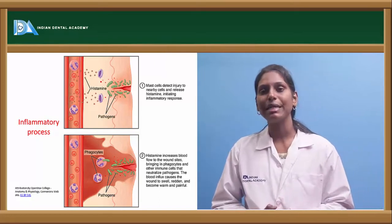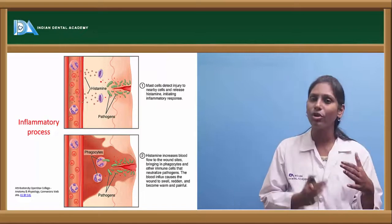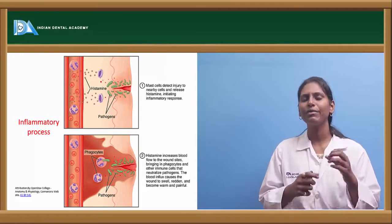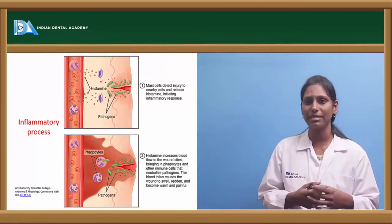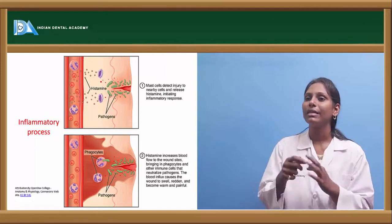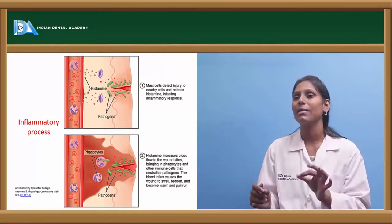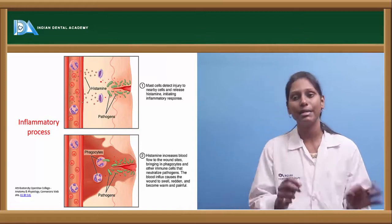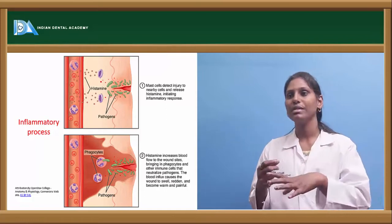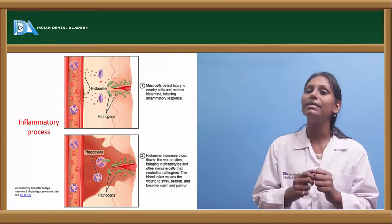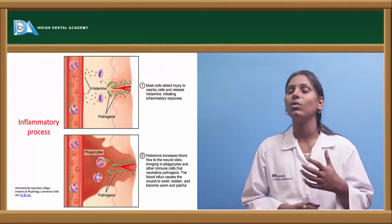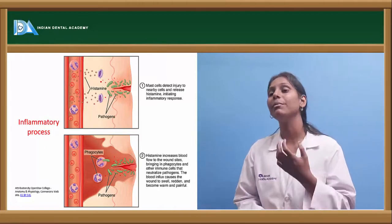The inflammatory process follows a stepwise action. Whenever there is a direct or indirect injury due to noxious stimuli, mast cells are attracted to the area, detect the injury to nearby cells, and release histamine. This histamine initiates the inflammatory response — once histamine increases blood flow, it brings phagocytes and other immune cells to the wound site to neutralize pathogens. The blood influx causes the wound to swell, redden, become warm, and painful.